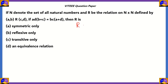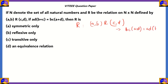We have the relation: (a,b) relates with (c,d) such that bc(a+d) equals ad(b+c). The relation is defined on N×N. In order for a relation to be reflexive, we need to prove that (a,a) belongs to R.